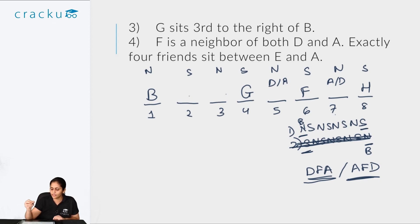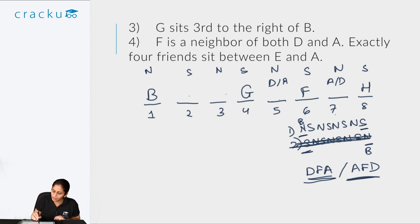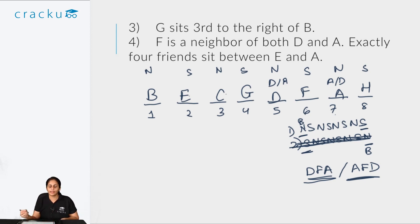The second part of clue 4 says exactly four friends sit between E and A. Four friends between E and A is only possible if E sits at position 2, making positions 3, 4, 5, 6 the four friends in between, and A at position 7. This means A is at position 7, D is at position 5, and E is at position 2. The remaining friend C takes position 3. The final arrangement is: B(1), E(2), C(3), D(5 — wait, G(4)), D(5), F(6), A(7), H(8).